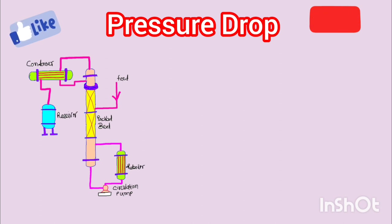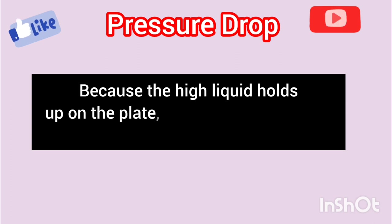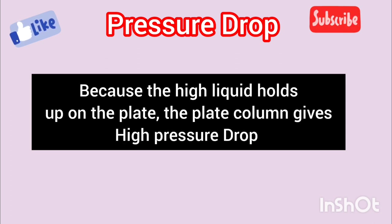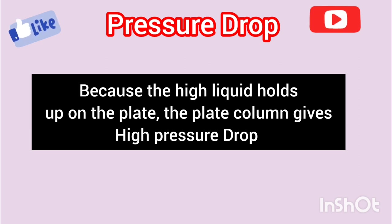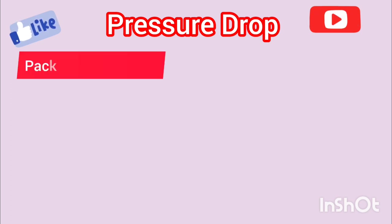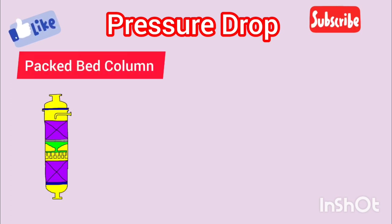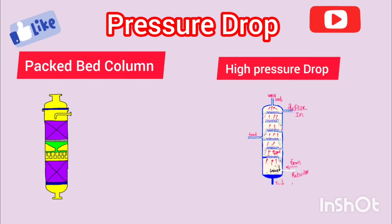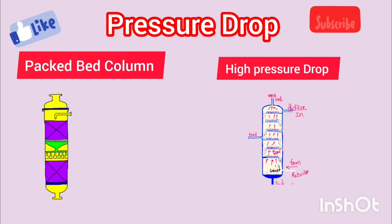Pressure drop is the second parameter. In some processes, managing pressure is critical. Packed columns excel in vacuum distillation where minimizing pressure drop is vital, due to their lower pressure drop per unit length. Tray columns, with their high holdup, result in a significant pressure drop, making them less suitable when pressure control is crucial. In short, if you want lower pressure drop, use backbed column. If you don't have any issue with pressure drop, then you can use tray column.